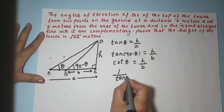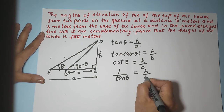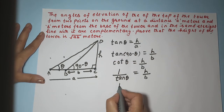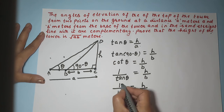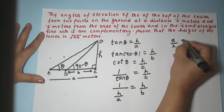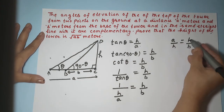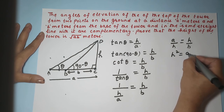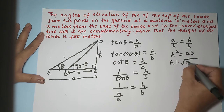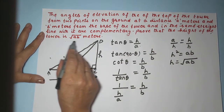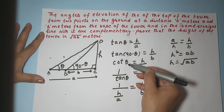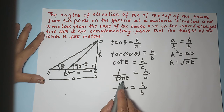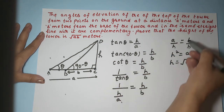We know tan(90 minus theta) equals cot theta, and cot theta equals 1 upon tan theta, since cot and tan are reciprocals. Substituting tan theta equals H upon A, we get 1 divided by (H upon A) equals H upon B, which gives A upon H equals H upon B. Cross multiplying gives H squared equals AB, so H equals root AB. That is what we had to prove — the height of the tower is root AB meters.